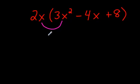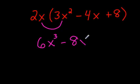So, if you can do this, you've got it made. 2 times 3 is 6. x times x squared is x cubed. 2x times negative 4x. Well, just start with the coefficients. Negative 4 times 2 is negative 8. x times x is x squared. Okay?